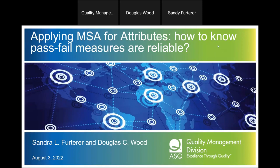We're looking at applying MSA for attributes. MSA — Measurement Systems Analysis — encompasses both gauge R&R and attribute agreement analysis. Attribute agreement analysis is specifically for pass-fail measures.